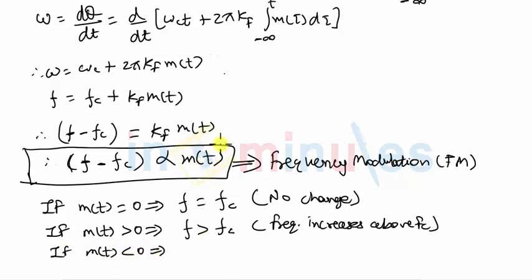that means the modulating signal is taking negative values, then f has to be less than fc and this means that the instantaneous frequency now decreases below fc.